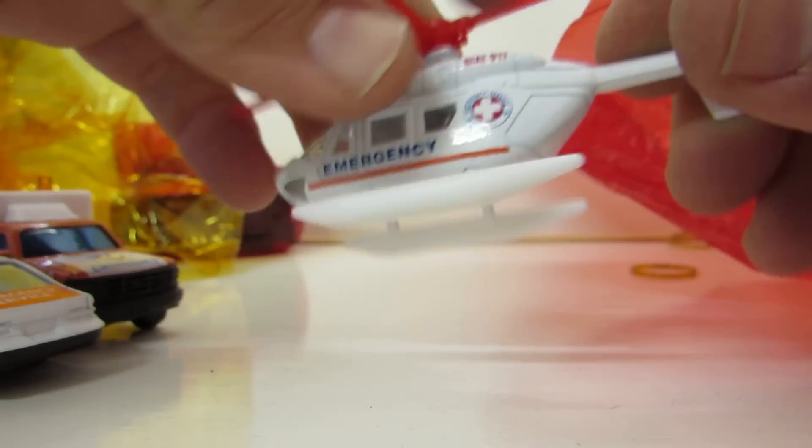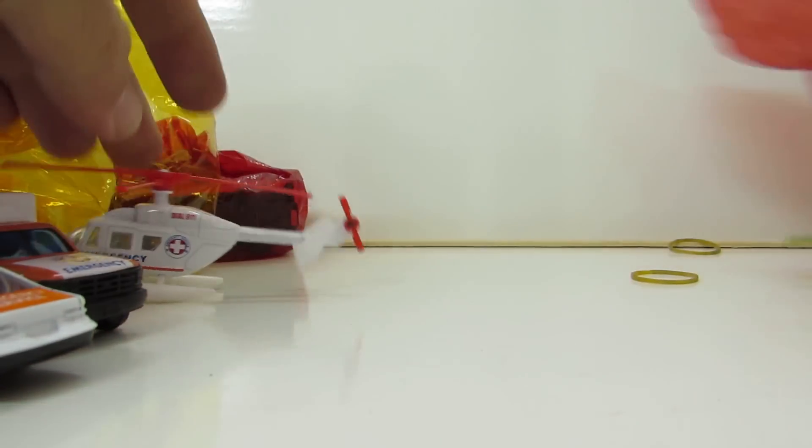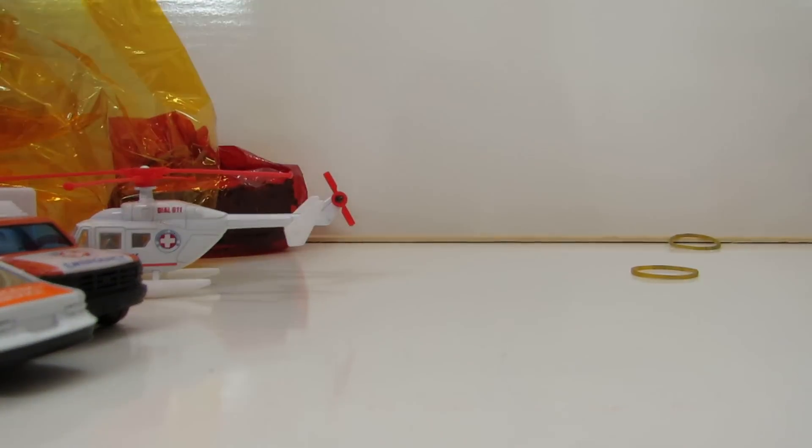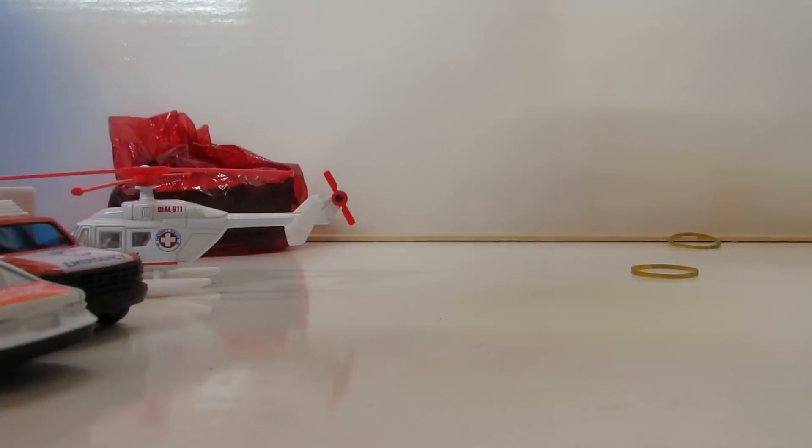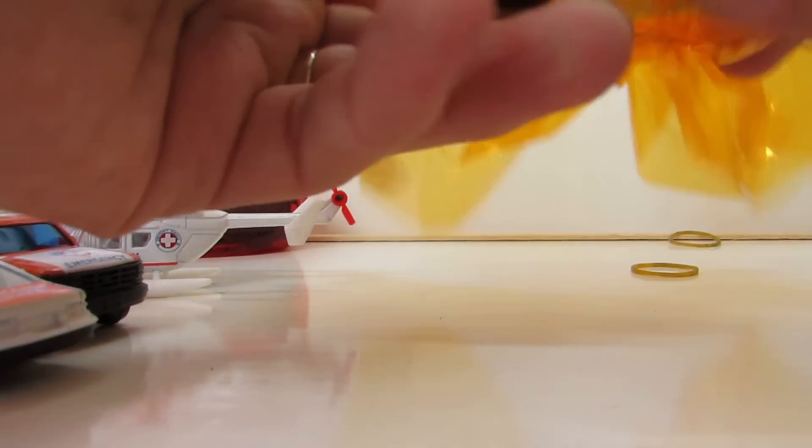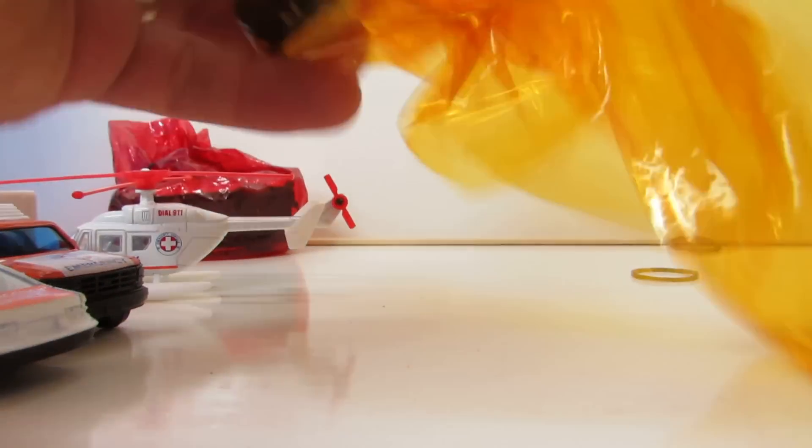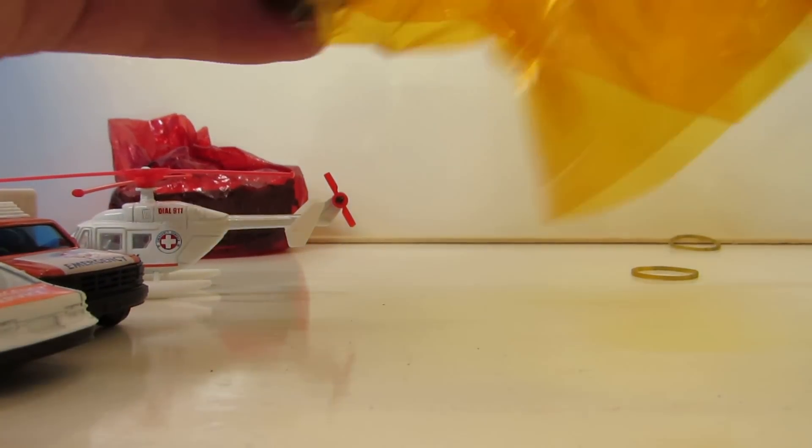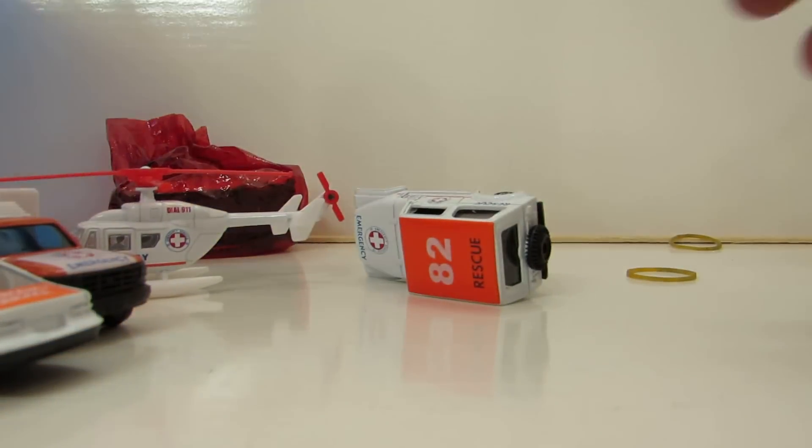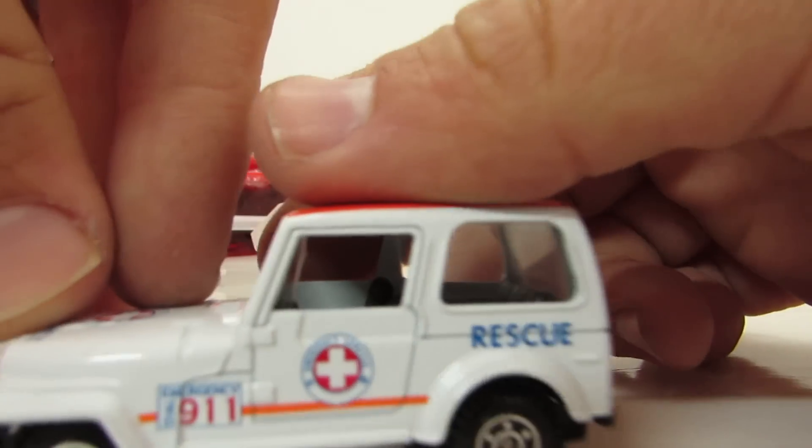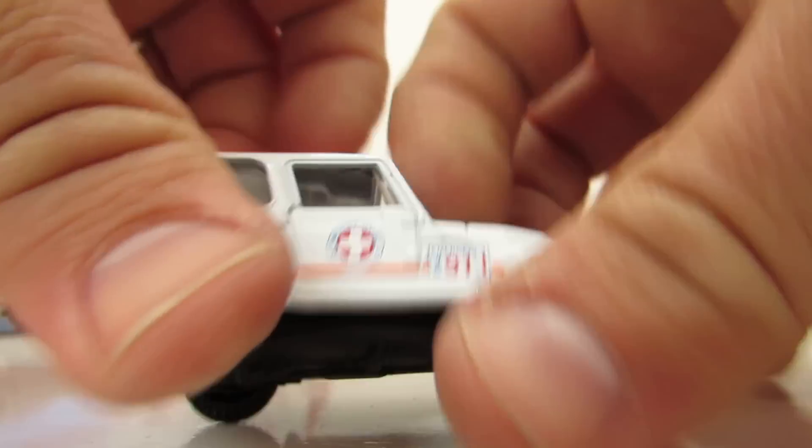Looks like a Bell, but if someone knows better, please correct me. And we've got the yellow one. You can see it's transparent all over, and that's another rescue team 9-1-1 four-wheel drive vehicle.